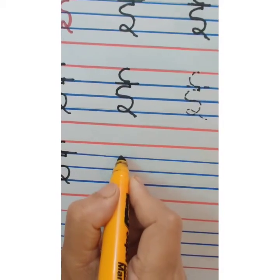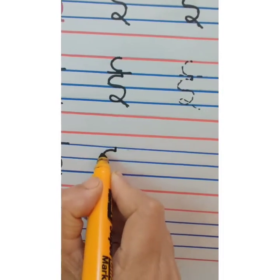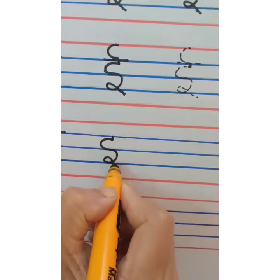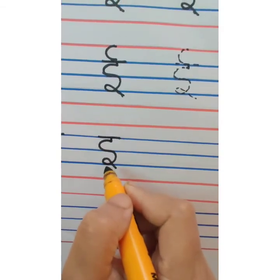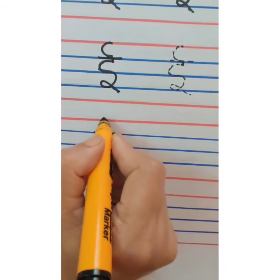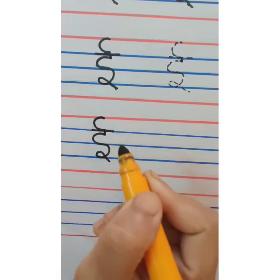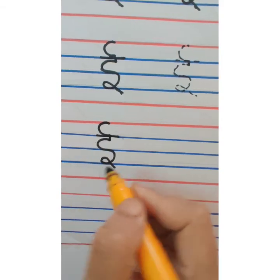Start with the first blue line. Small standing line, then c, ulta c. This is s. Then go up, take a loop. Overhead small sleeping line. This is chhoti e. And then you are going to give small c like this, red line to first blue line. This is badi e.